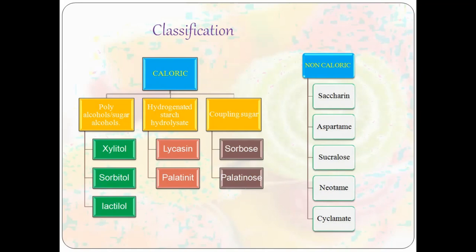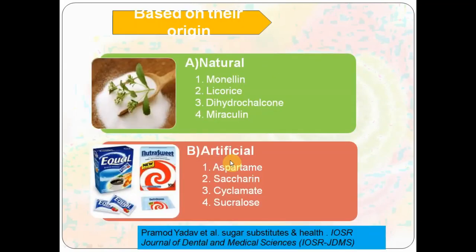The names can be confusing, but commonly encountered ones are xylitol, sorbitol, aspartame, saccharin, and sucralose — remember this classification. There is also a classification based on origin: natural and artificial. Natural sweeteners include monellin and glycyrrhizin, and miraculin.